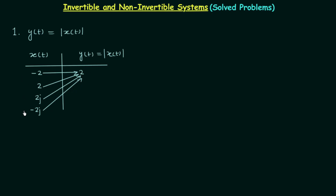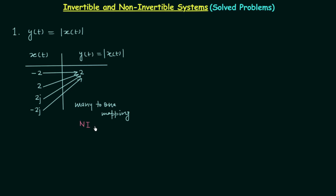For four different values of input we have the same value of output, therefore there is many-to-one mapping. When there is many-to-one mapping the system is non-invertible. So this system is non-invertible — and this is our answer.